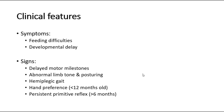For infants less than 12 months old, one of the signs would be a hand preference, which could suggest hemiparesis in cerebral palsy. They might also present with persistent primitive reflexes, where the primitive reflexes persist after six months old. Usually they are gone by six months; however, if they persist, it could be a sign of cerebral palsy.